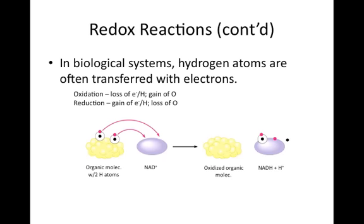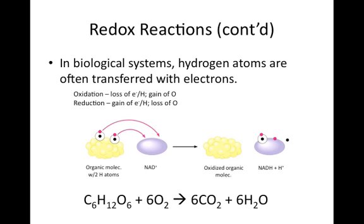Let's look at an example of oxidation and reduction in a chemical reaction. This reaction shows the breakdown of glucose into carbon dioxide and water during cellular respiration. We notice that glucose, the carbon-containing compound on the left, loses hydrogens to become carbon dioxide, the carbon-containing compound on the right. Therefore, glucose is the reduced form of the carbon-containing compound, and carbon dioxide is the oxidized form. The hydrogens lost by glucose were picked up by the oxygen on the left, forming water. Therefore, the oxygen on the left is the oxidized form, while the water on the right is the reduced form.